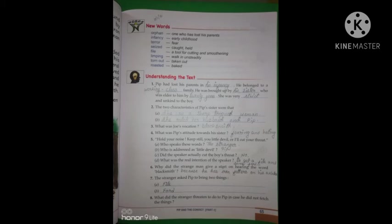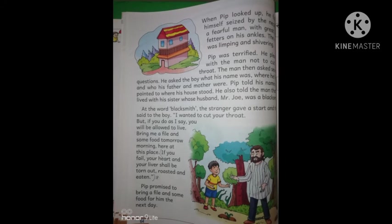What did the stranger threaten to do to Pip in case he did not fetch the things? Okay, students, I think you remember that the stranger said to Pip that if you fail your heart and your liver shall be torn out, roasted and eaten. This answer you will get on page number 64, second last paragraph.